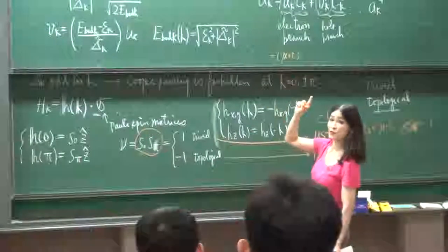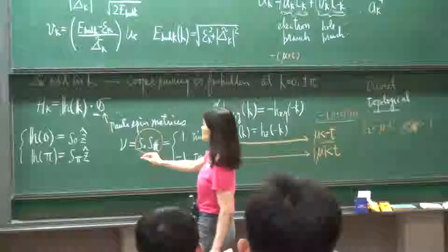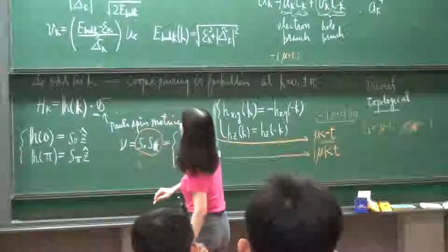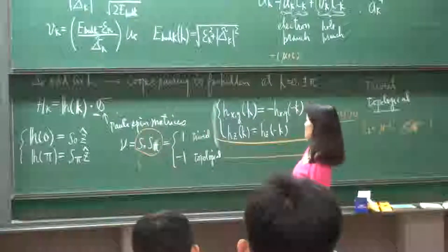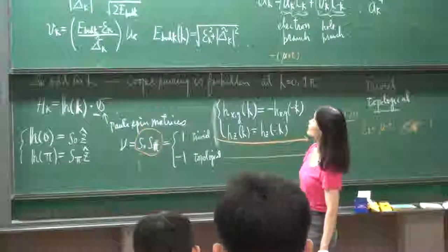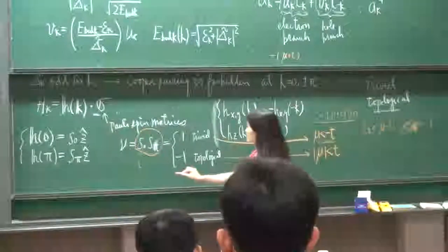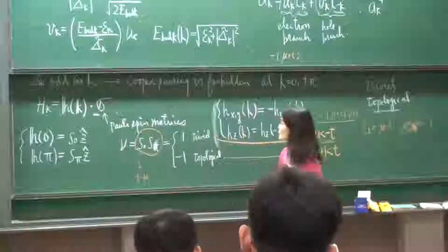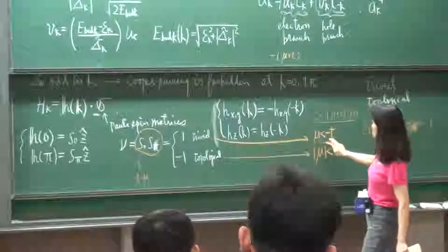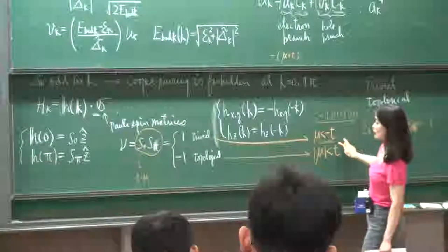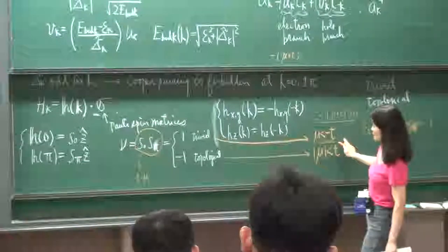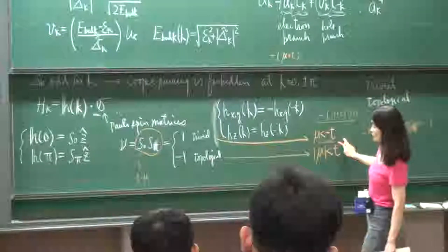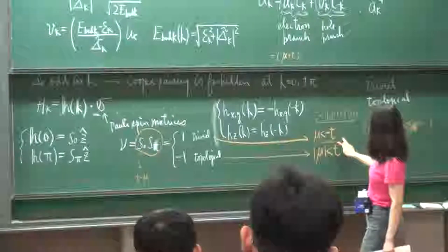So s(0) is 1. And then when k is π, I have t minus mu. So t minus mu — but mu is smaller than minus t.